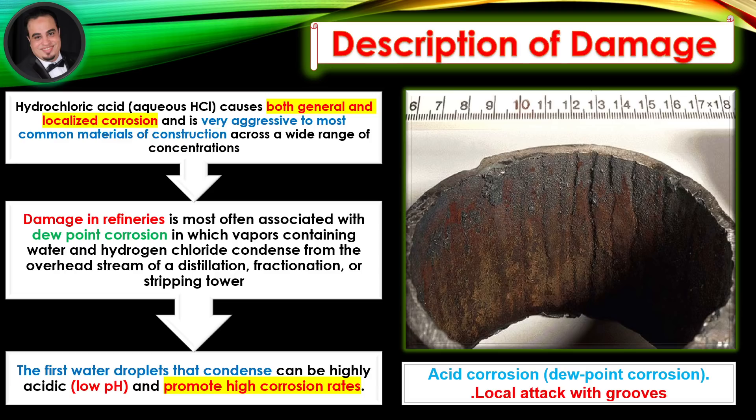The first water droplets that condense can be highly acidic, low pH, and promote high corrosion rates. As illustrated in the figure example of acid corrosion, dew point corrosion can lead to local attack with grooves.